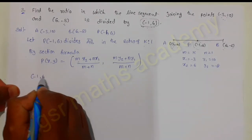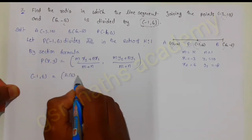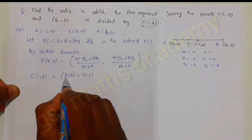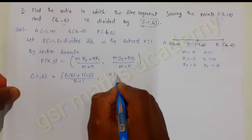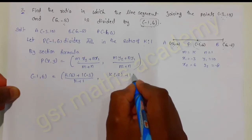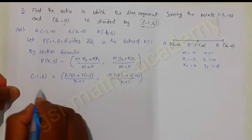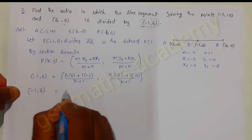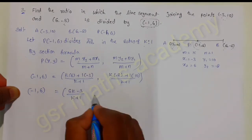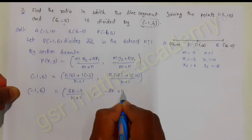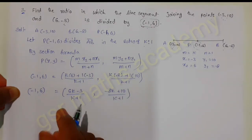So minus 1 comma 6 is equal to: k times x2 which is 6, plus 1 times x1 which is minus 3, divided by k plus 1; and k times minus 8 plus 1 times 10, divided by k plus 1. This gives us minus 1 comma 6 equals 6k minus 3 over k plus 1, and minus 8k plus 10 over k plus 1.